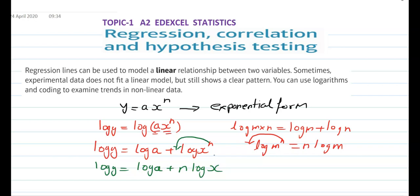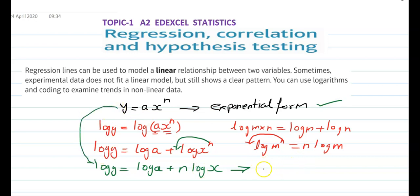So log y = log a + n log x. This is our logarithmic form — we have converted the exponential form into logarithmic form.